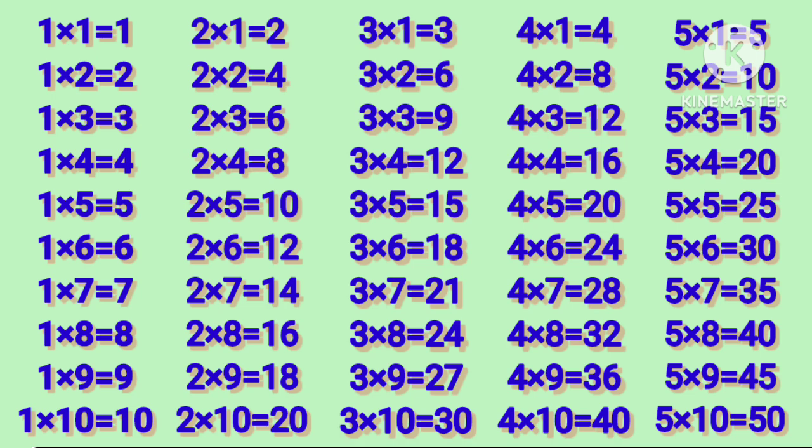4 ones are 4, 4 twos are 8, 4 threes are 12, 4 fours are 16, 4 fives are 20, 4 sixes are 24, 4 sevens are 28, 4 eights are 32, 4 nines are 36, 4 tens are 40.